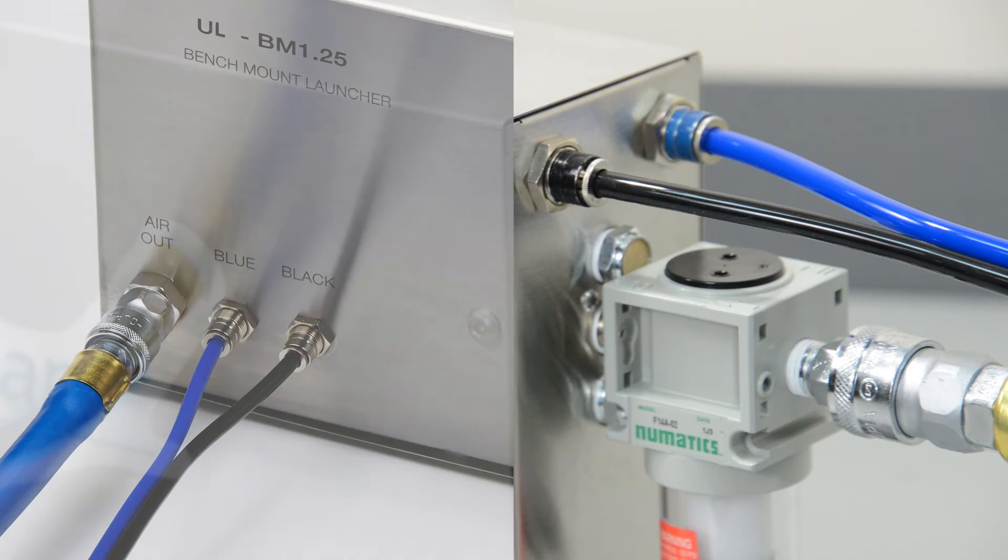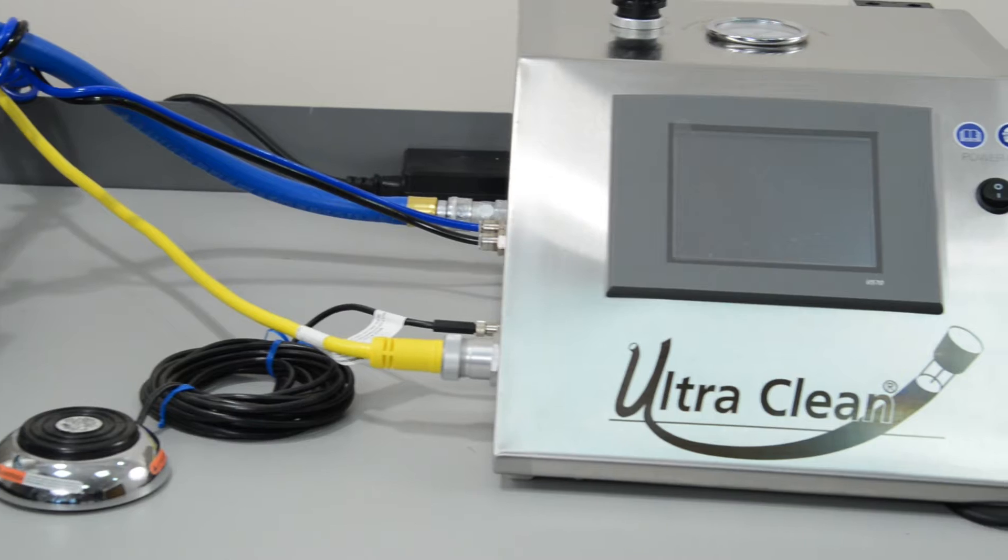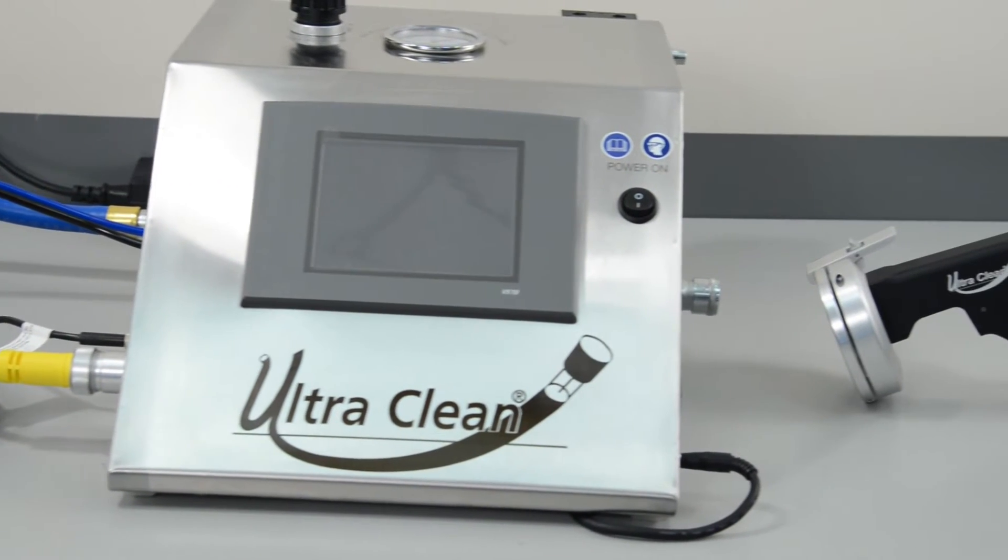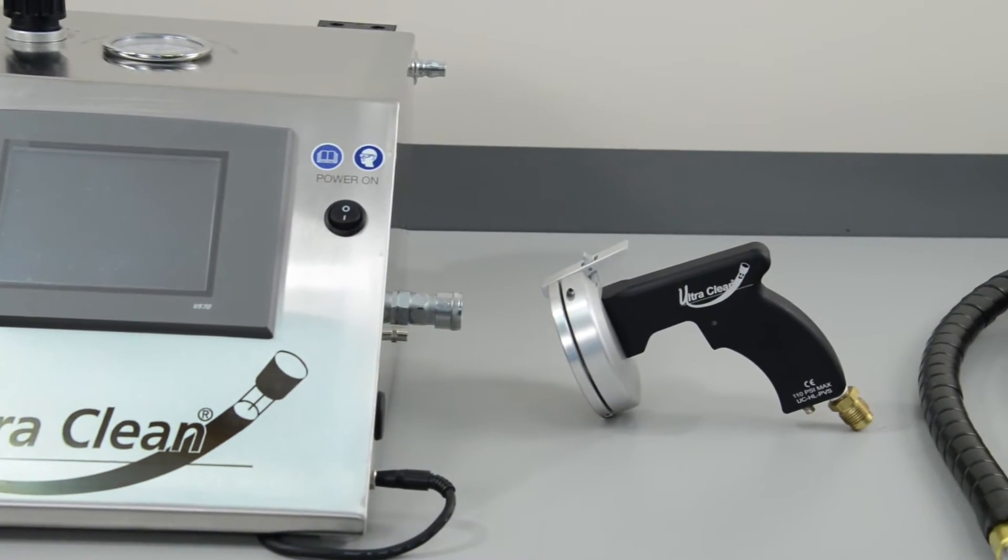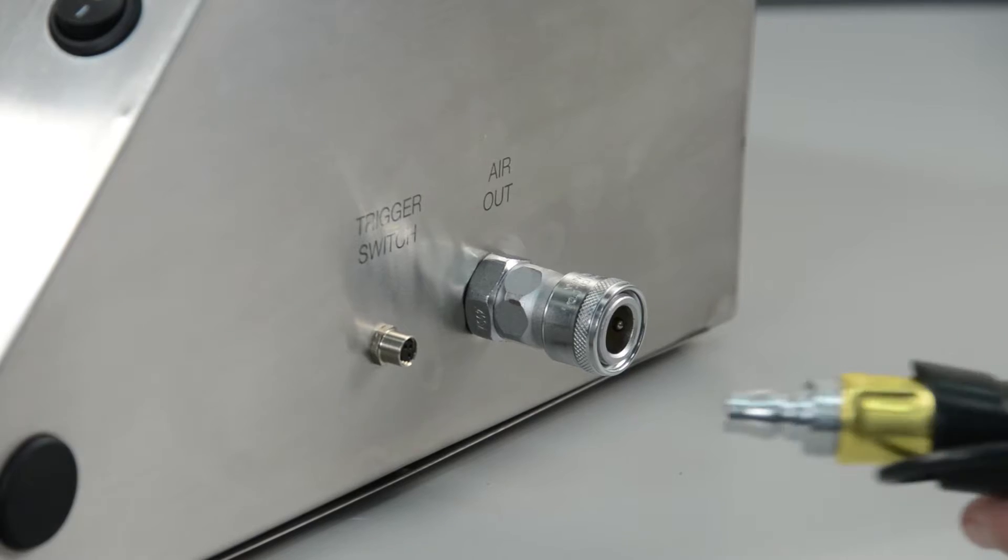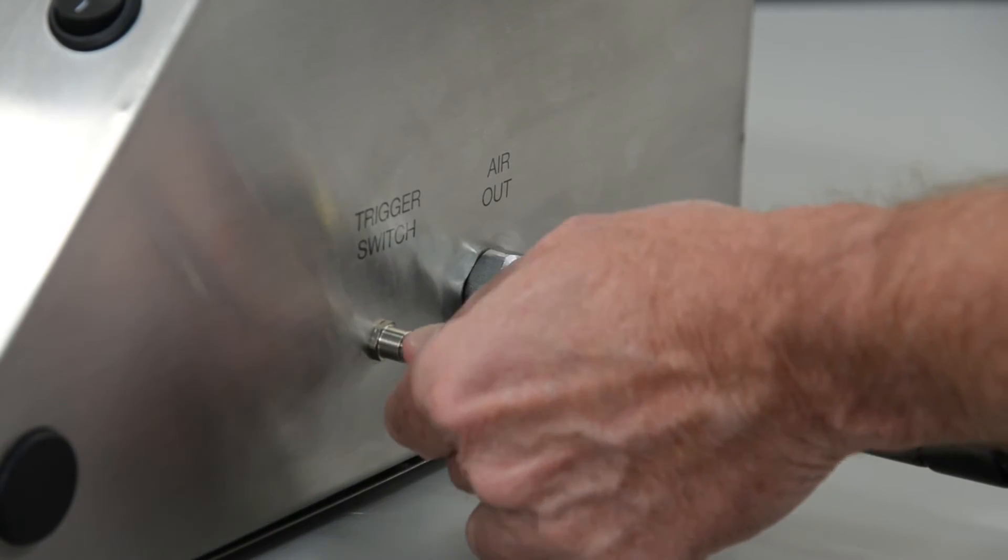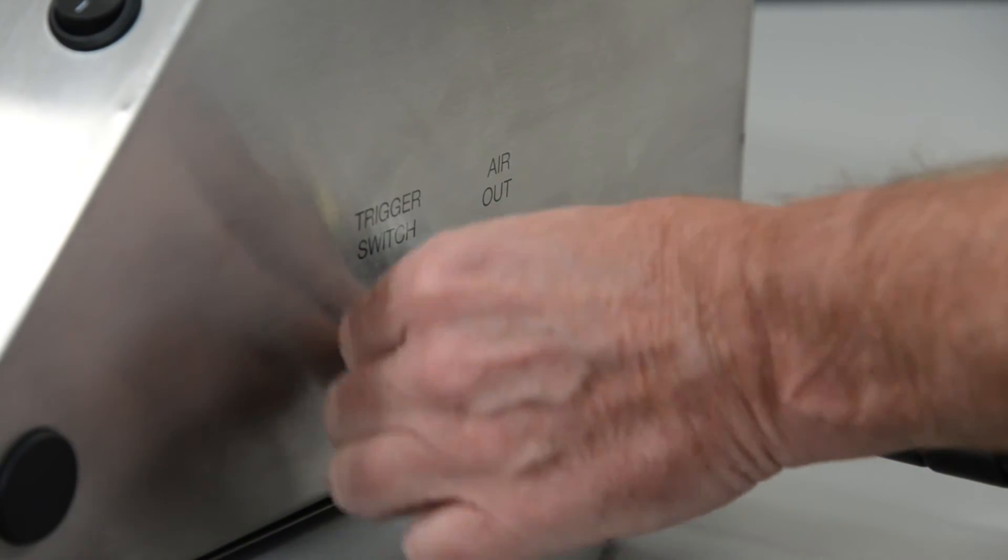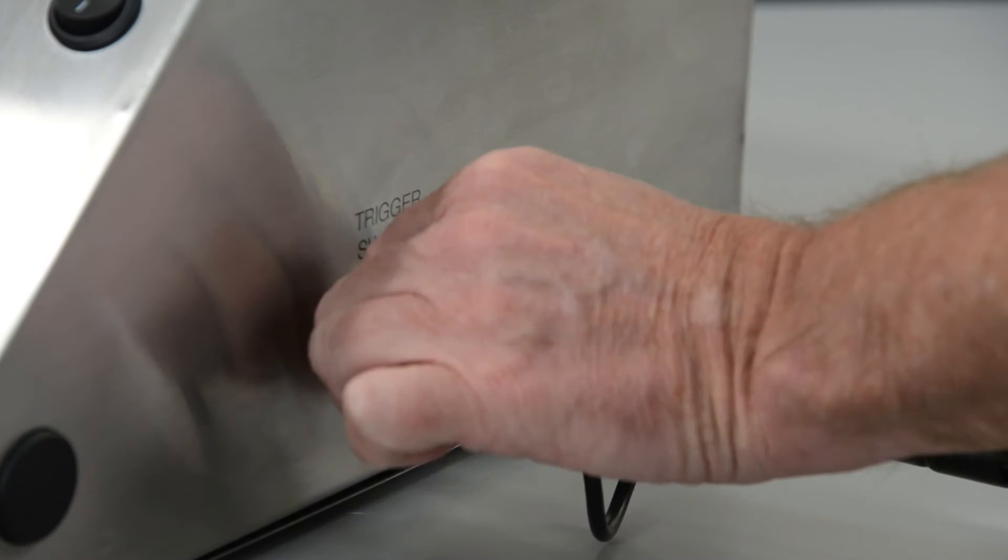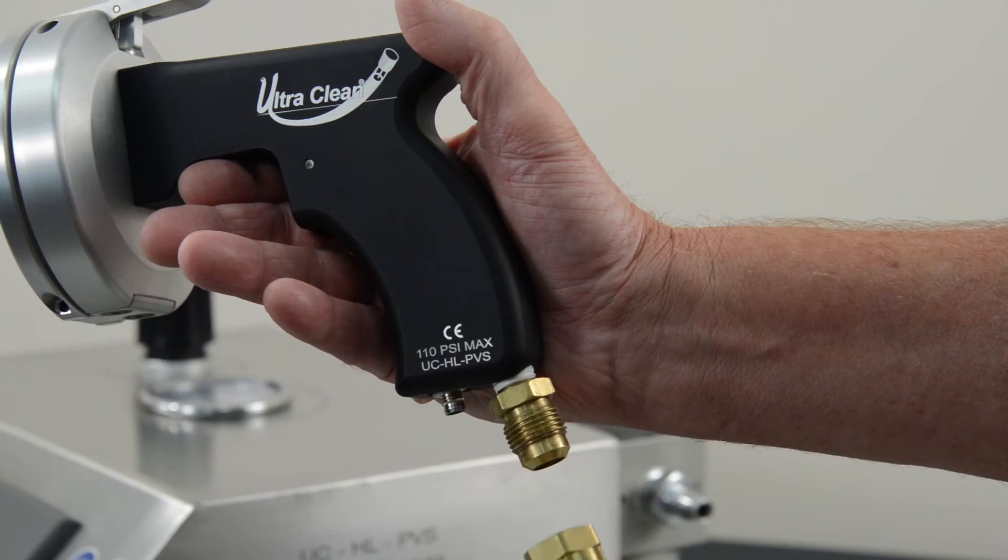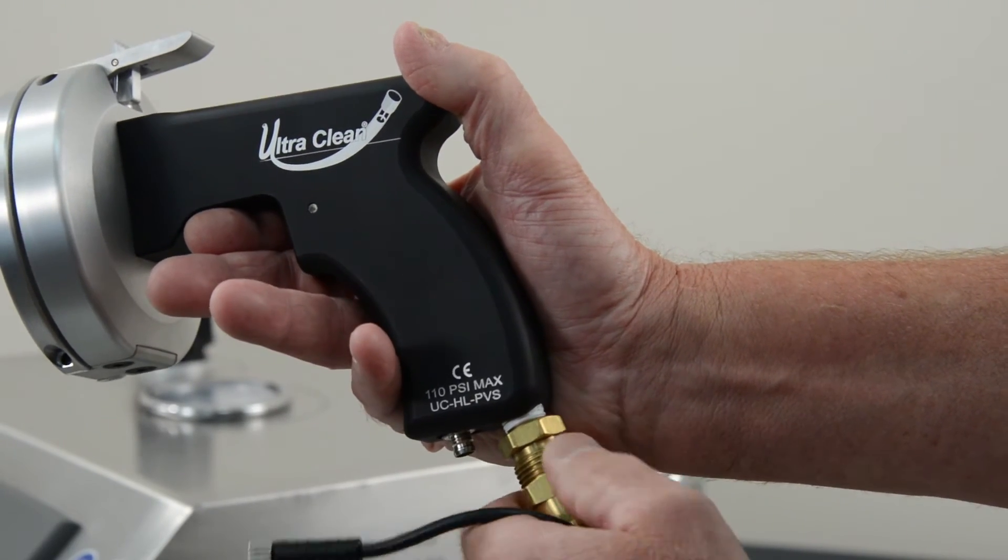Air connections are now complete between the control station and bench mount launcher. The UltraClean hand launcher connects to the right side of the control station. Connect the air hose to the quick coupler labeled air out and the 3-pin cable to the socket labeled trigger switch. Connect the air hose and 3-pin cable to the bottom of the launcher handle.